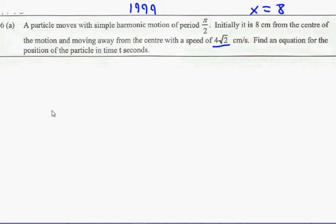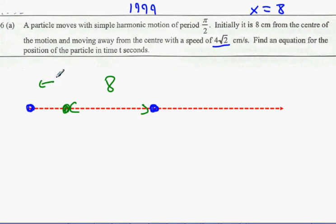The reason why this one happens to be different from other ones is usually you start at the start or you start at the extreme point. What they've done is they said we're 8 cm away from the centre and they said we're not stationary, we're actually still moving away at 4√2. This matches the sine ωt plus ε question because we're not at the beginning, we're not at the middle and we're not at the end.